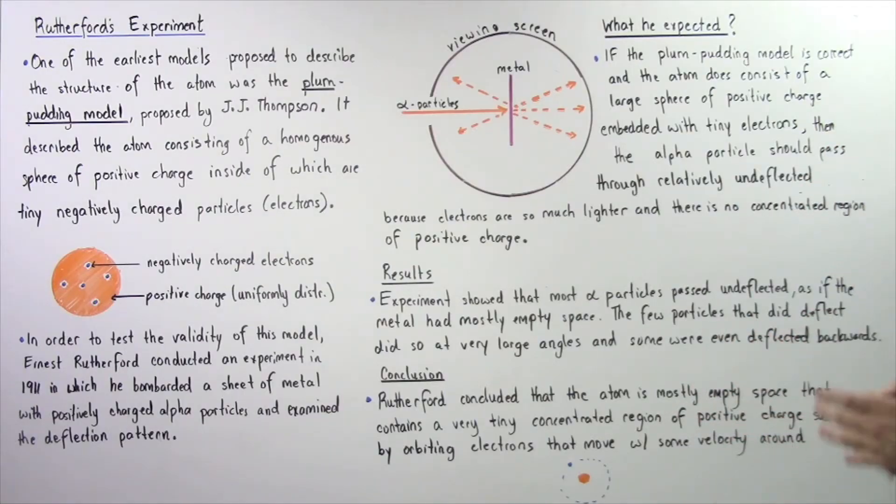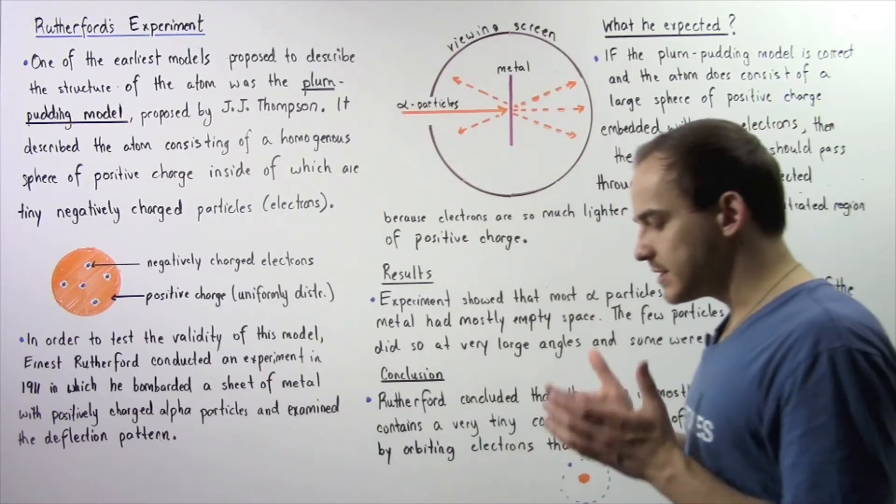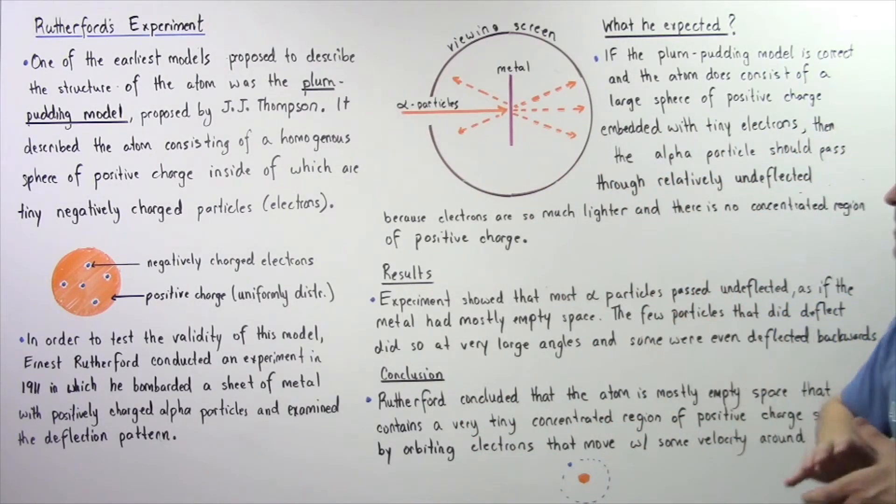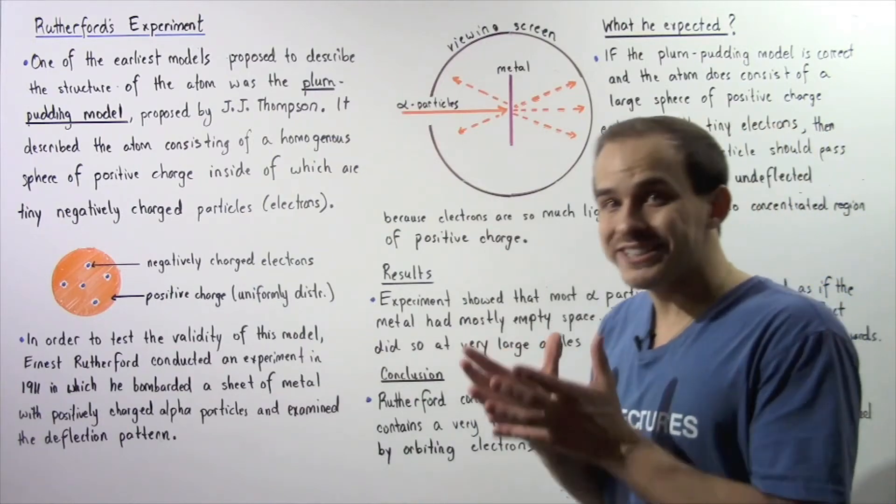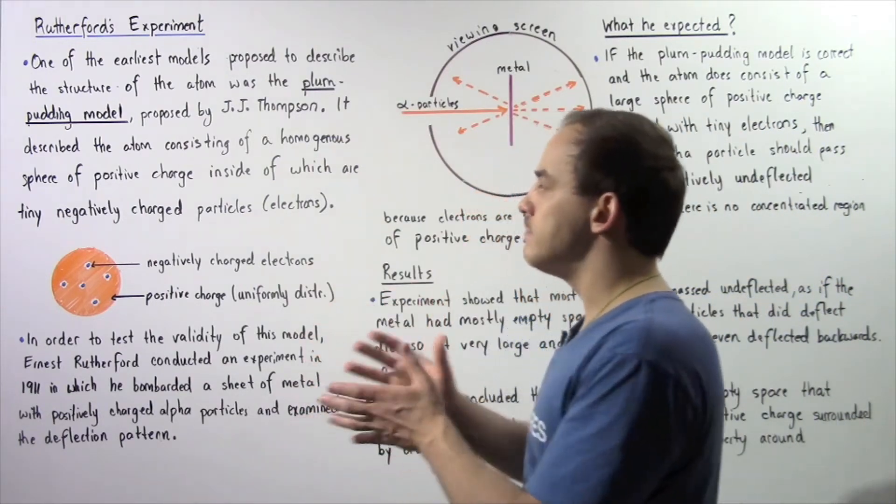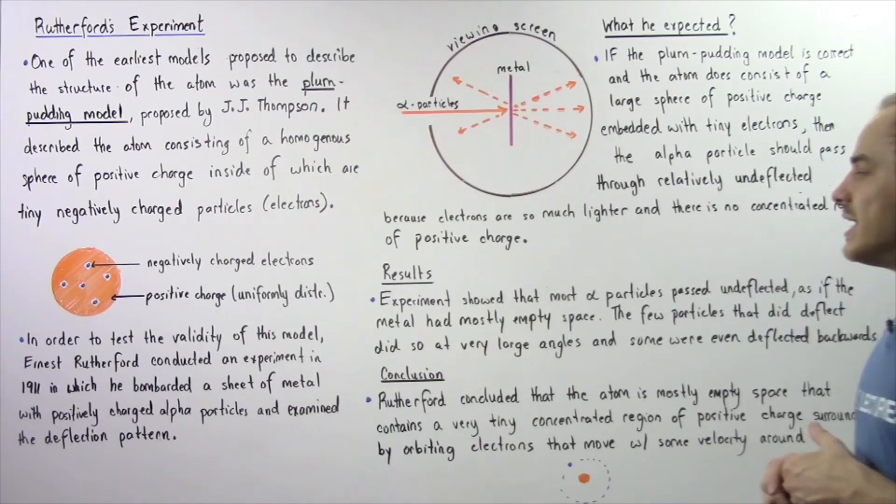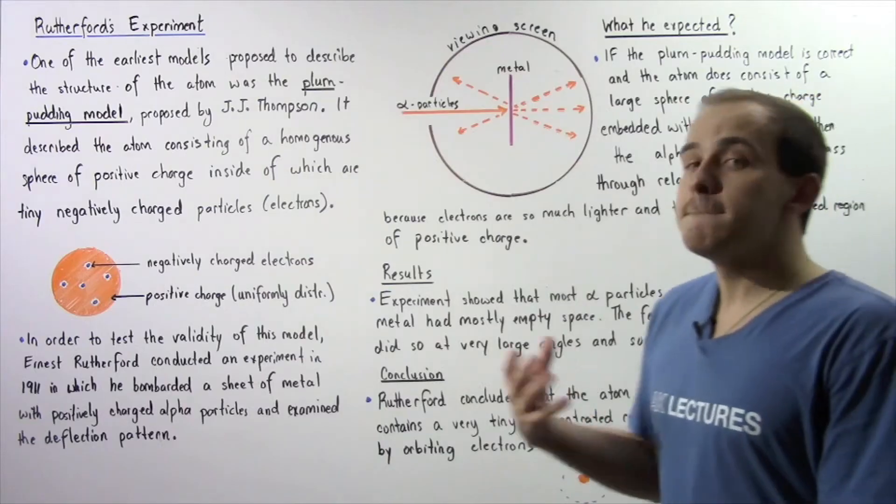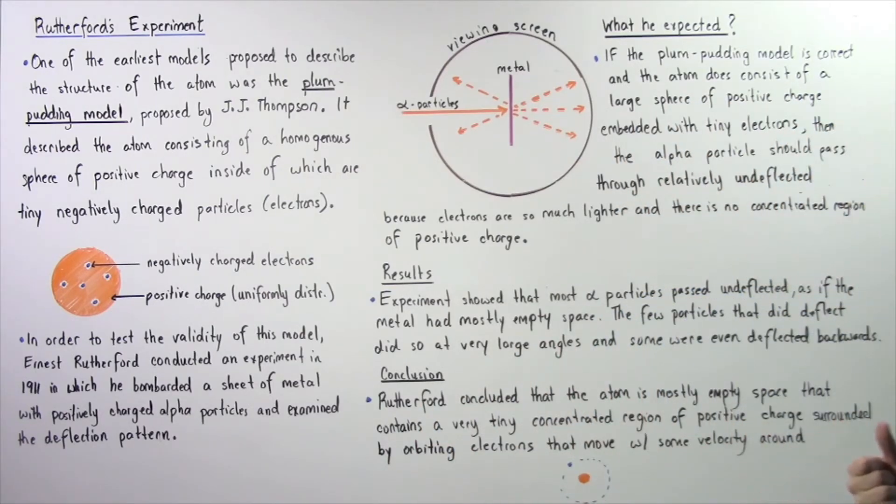What exactly were the results of this experiment? In many important ways, the results of this experiment basically contradicted the plum pudding model of the atom. The experiment showed that most alpha particles passed undeflected as if the metal consisted mostly of empty space.